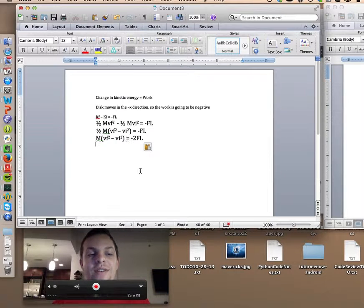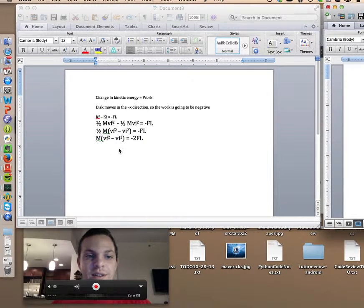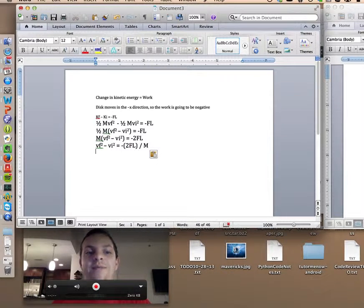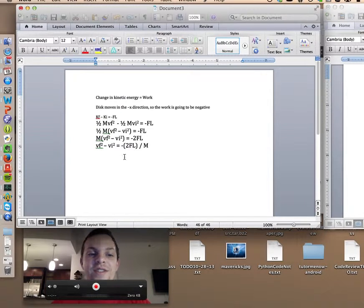And then we're going to need to divide by m on both sides now, so that we can move the m over, get it out of our way, so we can continue to isolate vf. So after we divide by m, we are now left with vf² minus vi² equals negative 2fl over m. So finally, we can see that vf² is negative 2fl over m plus vi², because we can now just move over the initial velocity.